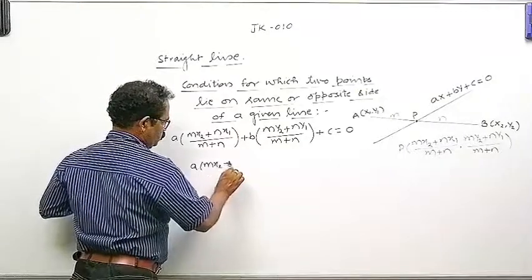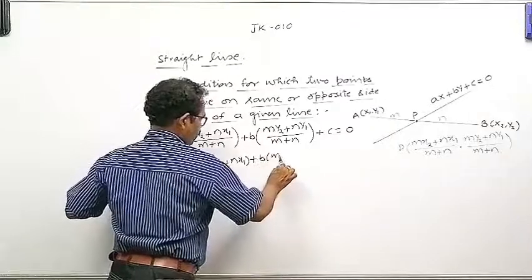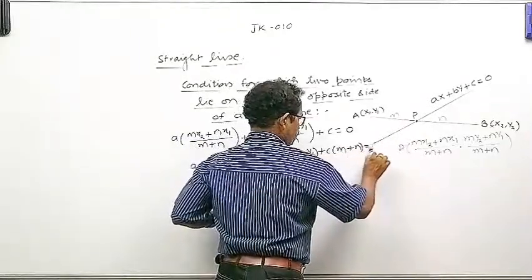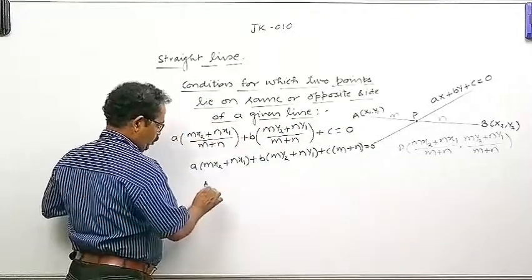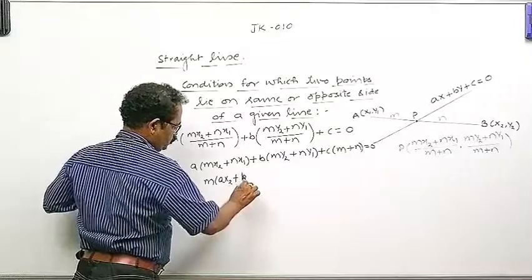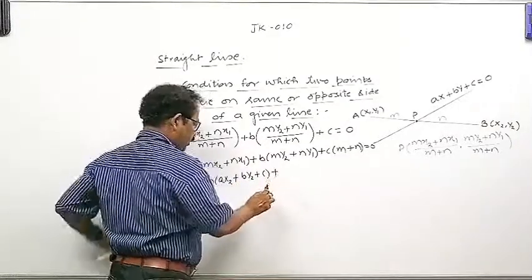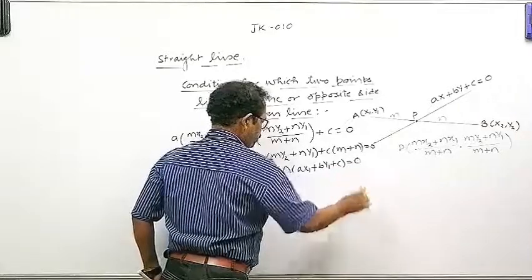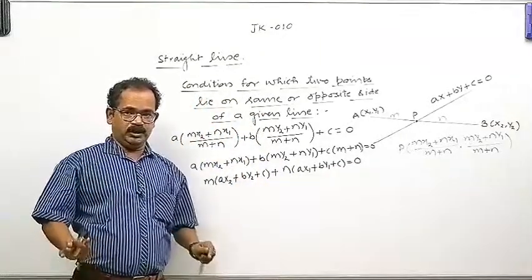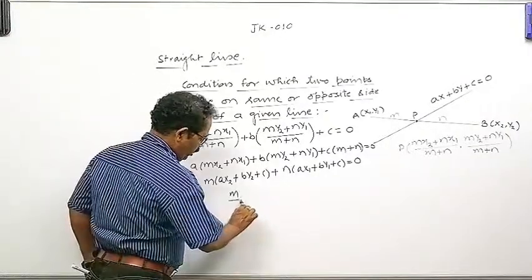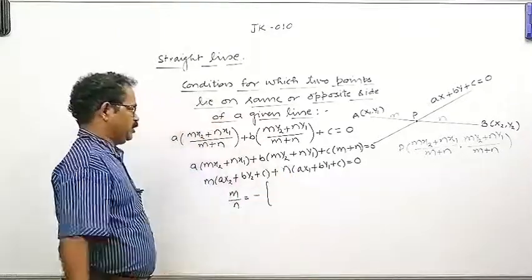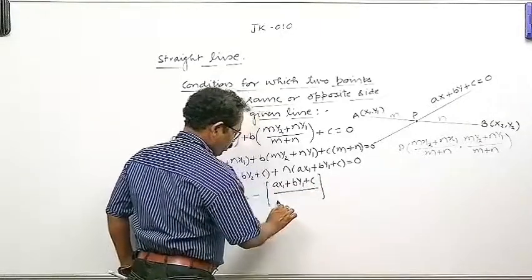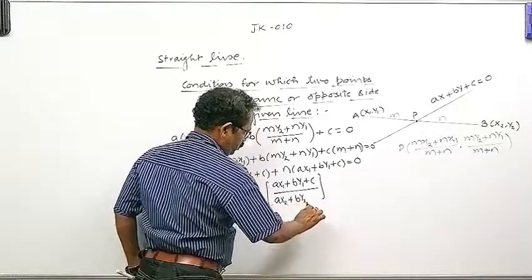Simplifying, a(mx2 plus nx1) plus b(my2 plus ny1) plus c(m plus n) is equal to zero. Taking m common: m(ax2 plus by2 plus c) plus n(ax1 plus by1 plus c) is equal to zero. So m upon n is equal to minus times (ax1 plus by1 plus c) upon (ax2 plus by2 plus c).